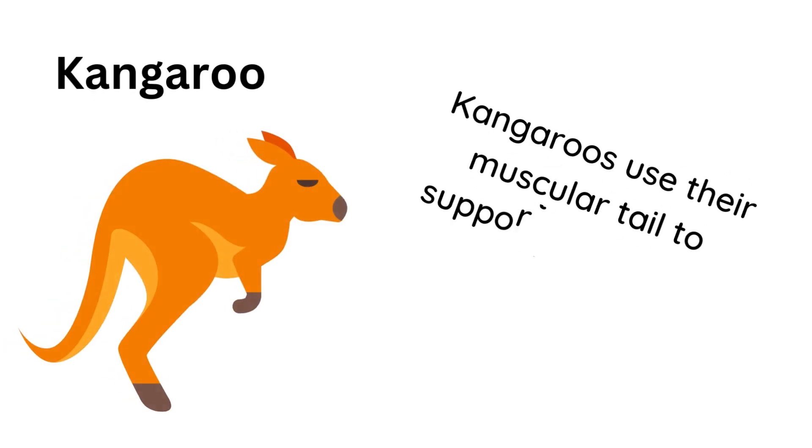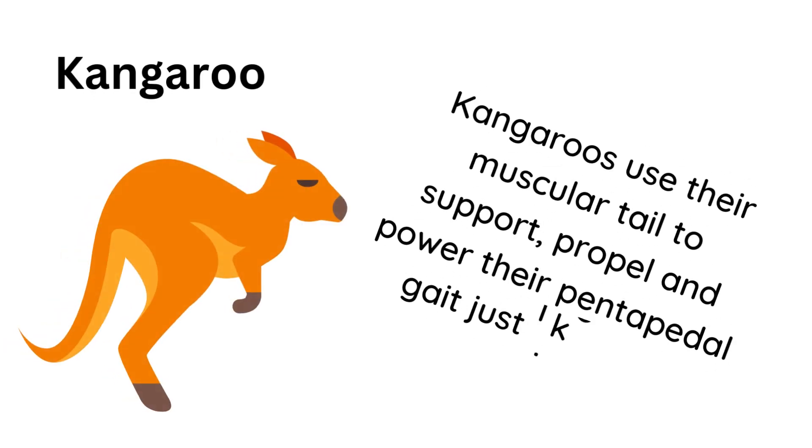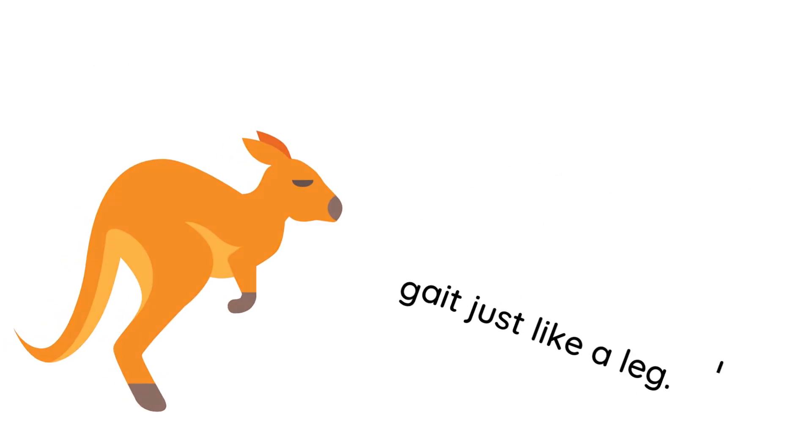Kangaroos use their muscular tail to support the propellant power of their pentapedal gait, just like a leg.